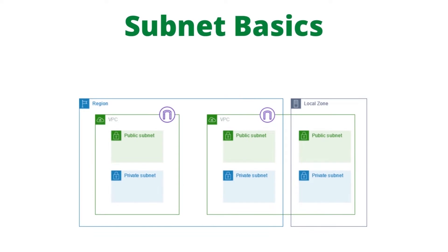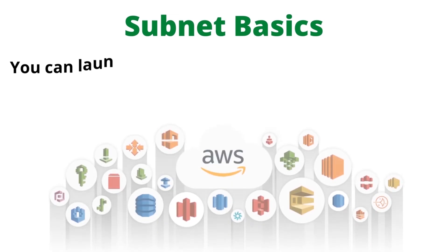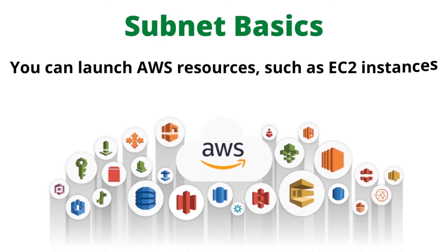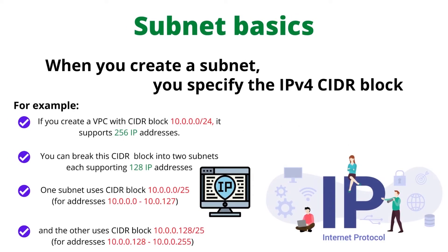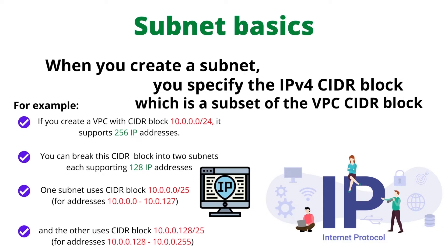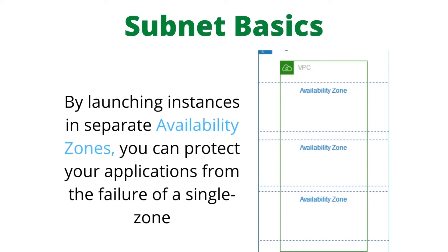Subnet basics: a subnet is a range of IP addresses in your VPC. You can launch AWS resources such as EC2 instances into a specific subnet. When you create a subnet, you specify the IPv4 CIDR block for the subnet, which is a subset of the VPC CIDR block. Each subnet must reside entirely within one availability zone and cannot span zones. By launching instances into separate availability zones, you can protect your applications from the failure of a single zone.